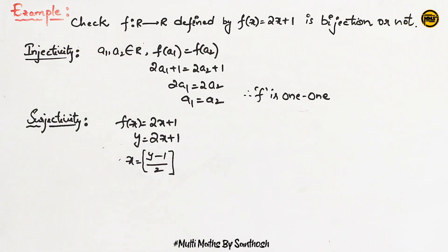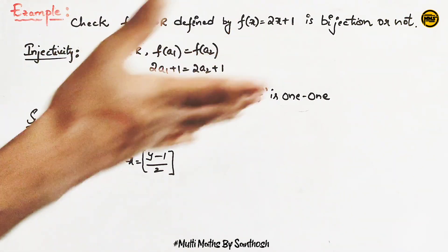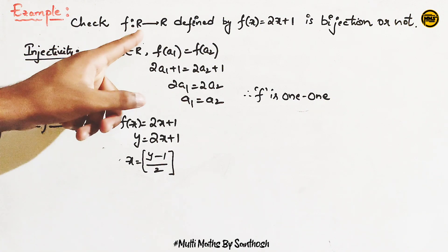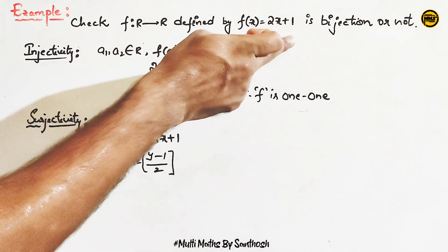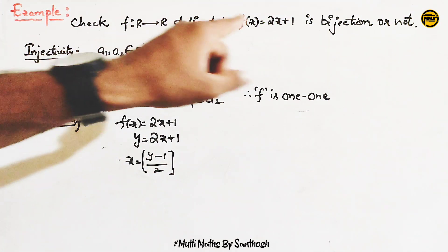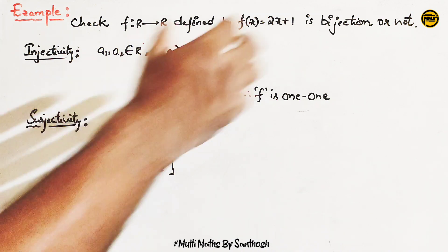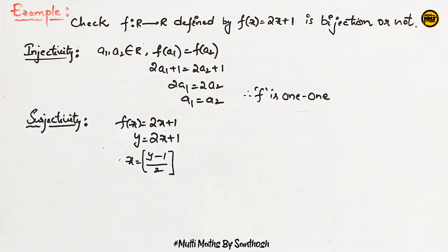Let's take an example. Check: f from R to R, where R is the set of real numbers. Domain is set of real numbers and codomain is also set of real numbers. The function is defined by f(x) = 2x + 1. Is this a bijection or not? We will find out.